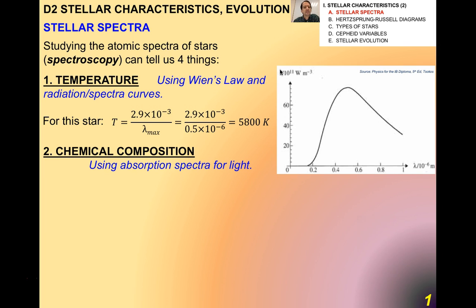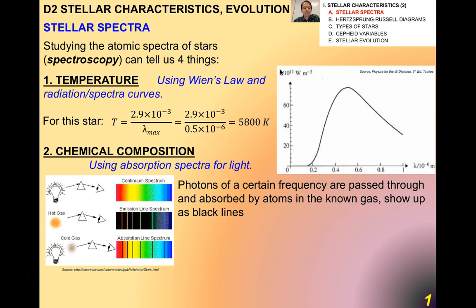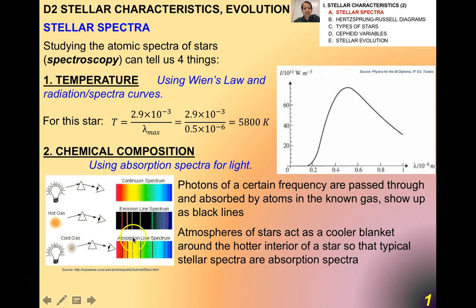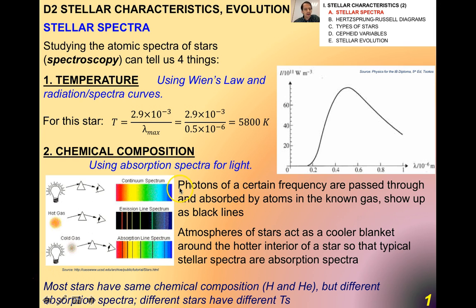The second thing that stellar spectra can tell us is the chemical composition of stars. In order to do this, we can utilize the absorption spectra for light. Again, we've studied this before. Remember the difference between the emission line spectrum and the absorption line spectrum. Remember that photons of a certain frequency are passed through and absorbed by atoms in the known gas, and what they do is they show up as black lines in the absorption line spectrum. Now, the atmospheres of stars essentially act as like a shell, as a cooler blanket around the hotter interior of a star. So typical stellar spectra are the absorption spectra. And remember that the absorption line spectrum for a star tells us the chemical composition of the outer atmosphere, the shell around that star, not what's going on on the inside. And it turns out that most stars have the same chemical composition, hydrogen and helium, but they have different absorption spectra. And the reason is because different stars have different temperatures.